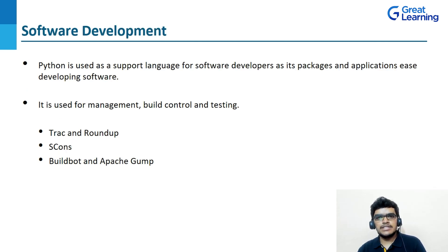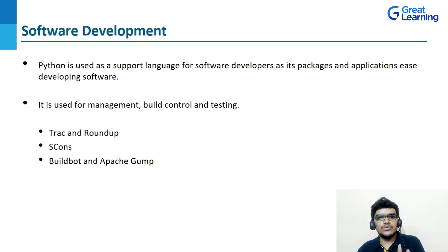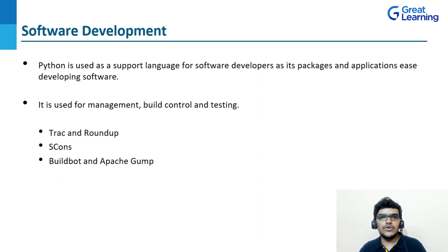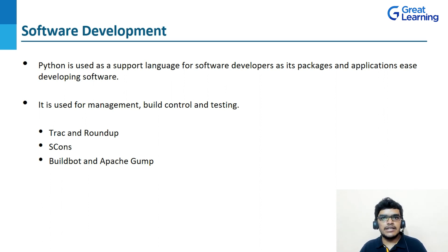Now coming to software development: software developers use Python as a supporting language because packages and applications in Python are used to simplify the process of software development. Python is used for build control, testing, and management. For instance, Trac and Roundup are good for bug tracking as well as project management. SCons is explicitly designed for build control. Buildbot and Apache Gump allow automated continuous compilation and testing.